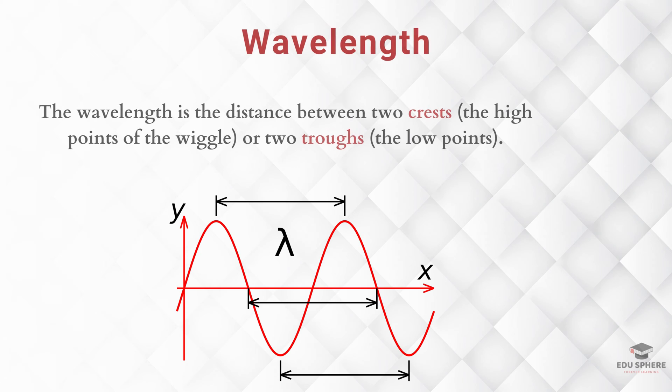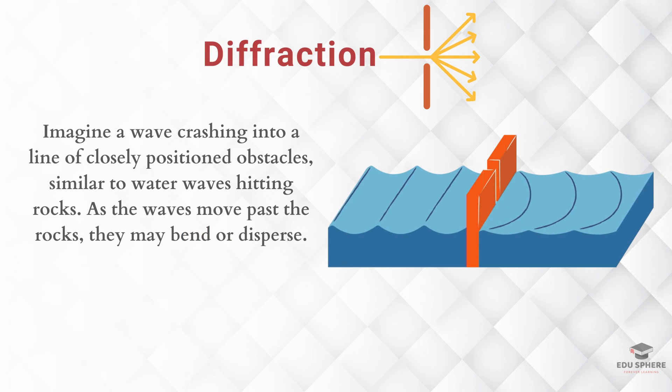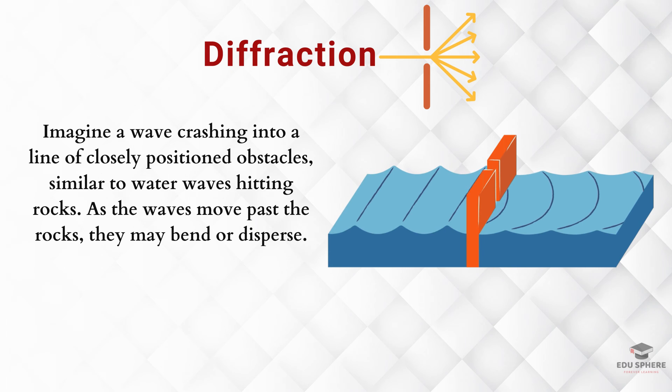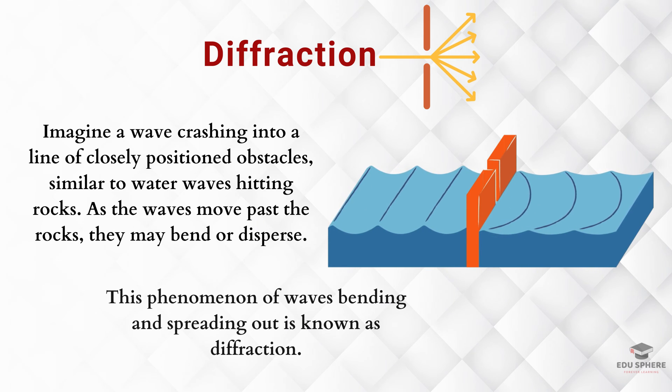Let's take a quick look at what wavelength is. It's just the distance between two repeating parts of a wave, as shown in this diagram. Now, picture a wave hitting a row of closely spaced obstacles, like water waves hitting rocks. The waves might bend or even spread out after passing the rocks. This bending and spreading of waves is called diffraction.